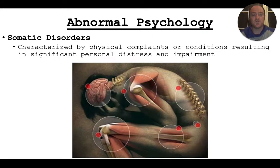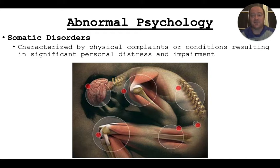Somatic disorders are characterized by when you have physical complaints or physical pain or conditions that may or may not actually be caused by something physical. Sometimes the mind may be causing it rather than the body. So these are basically when the mind and the body have a disconnect and a conflict between them, sometimes due to mental illness. Physical complaints and conditions that result in really significant distress and impairment.